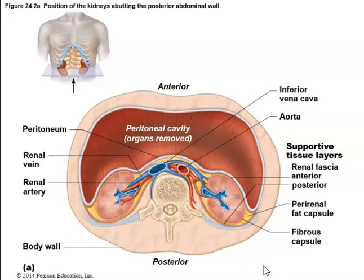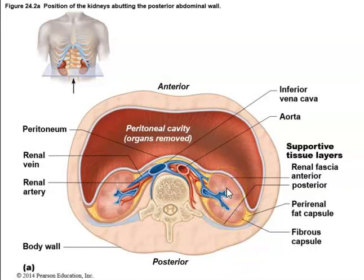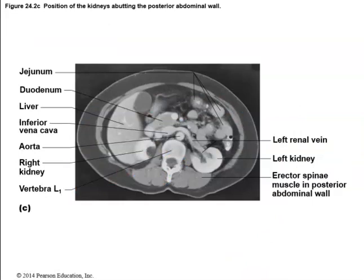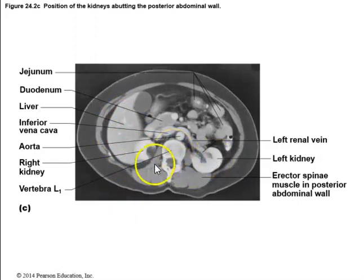This picture shows the retroperitoneal position of the kidneys behind the peritoneal cavity. The first layer surrounding the kidney is the renal or fibrous capsule, then the perirenal fat capsule, surrounded by the renal fascia. A CT scan also confirms the kidney location around vertebral level L1, with the left and right kidneys visible.